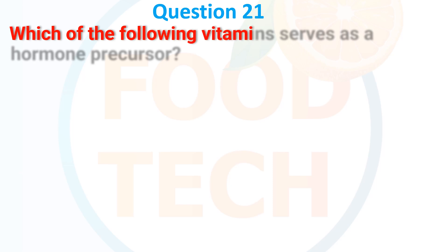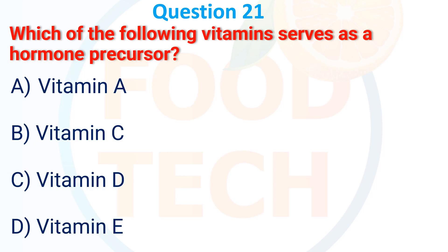Question 21. Which of the following vitamins serves as a hormone precursor? A. Vitamin A. B. Vitamin C. C. Vitamin D. D. Vitamin E. The correct answer is C: Vitamin D.